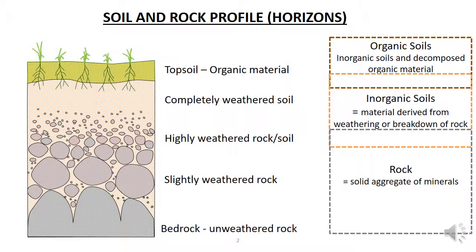The soils on the surface are more exposed to weather and air and so break down quicker. The top layer is also exposed to plants and animals. Dead animals and plants decompose on the surface into organic compounds. These organic compounds mix with the inorganic soil from the weathering of rock to form organic soils such as topsoil. Organic soils are usually rich in nutrients and minerals that allow plants to grow.